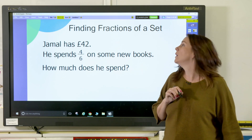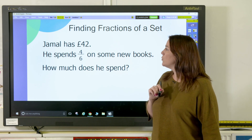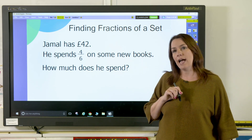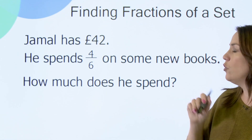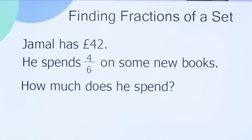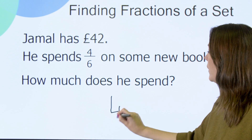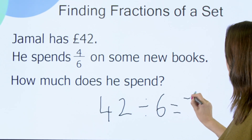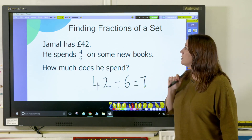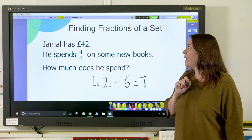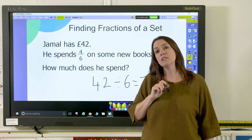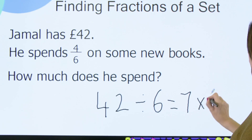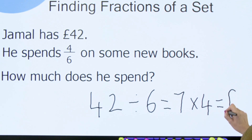Jamal has 42 pounds and he spends 4 sixths of that on some new books. How much does he spend? The denominator here is six, so we need to divide 42 by six, which is seven. But we're not asked for one sixth of 42 — seven pounds — we're asked for four sixths, so we need to multiply our seven pounds by four.